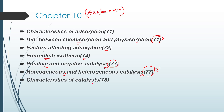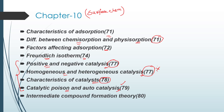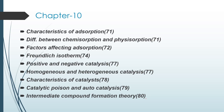Characteristics of catalysts is a very important 5-mark question, page 78. Next, catalytic poison and auto catalysis — all definitions are on page 79. Then intermediate compound formation theory — important 3 marks, page 80. Next, adsorption theory on page 81. Then active sites on page 82.